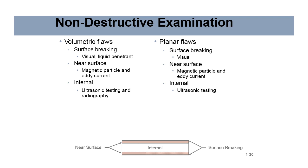Volumetric flaws fall into surface breaking, near surface, and internal categories. If it's a surface breaking flaw, you can use visual, liquid penetrant, or mag particle to find it. If it's a near surface flaw, you can use mag particle or eddy current. And if it's an internal flaw, ultrasonic testing and radiography are used. For planar flaws, if it's surface breaking you use visual; near surface uses mag and eddy current; and internal uses ultrasonic testing. The reason you can't use radiography for planar flaws is it won't pick them up — it'll just shoot right through. Volumetric flaws can be found by radiography, but planar flaws cannot.